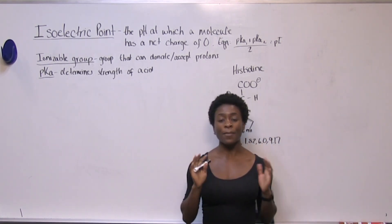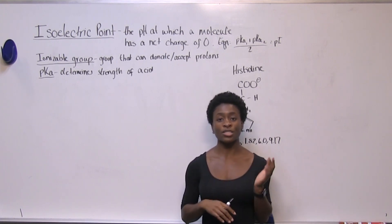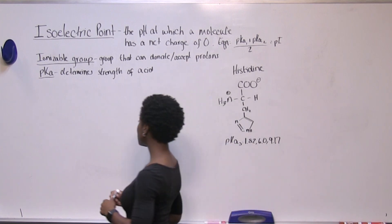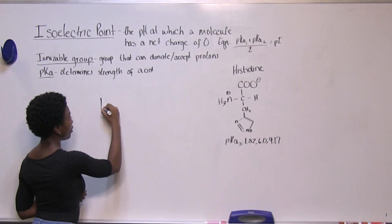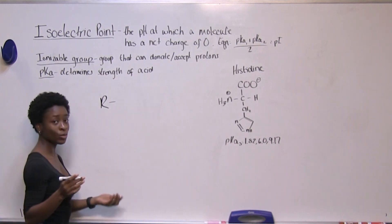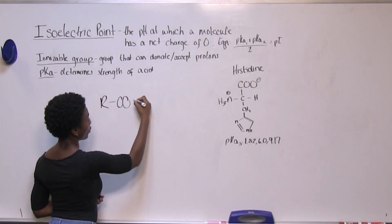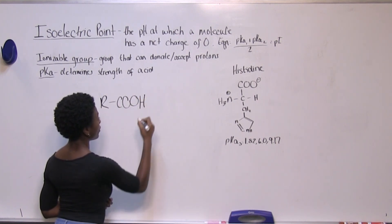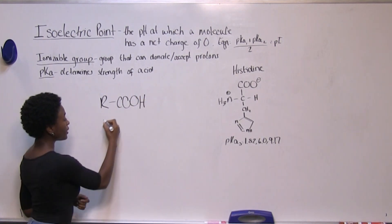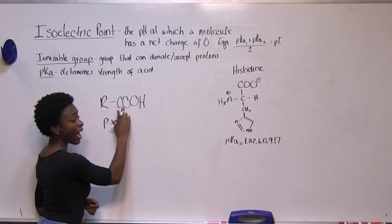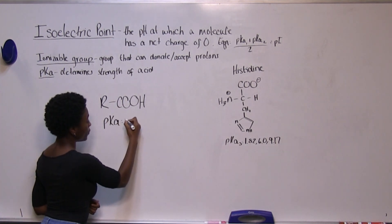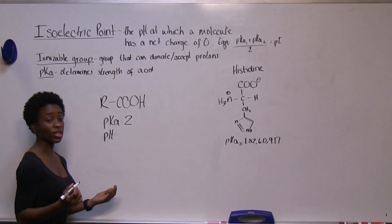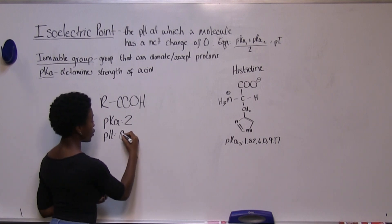Before we look at amino acids and peptide chains, I'm going to give you a generic situation so you can see what's going on. Say we have a generic molecule with an ionizable group attached to it — we'll use a carboxyl group in its protonated form. Say our pKa of this ionizable group is going to be two, and our pH will be 0.5.